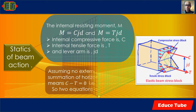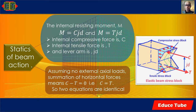The internal resisting moment M results from an internal compressive force C and an internal tensile force T, separated by the lever arm zd. As previously noted, the axial load N equals zero, so the summation of horizontal forces gives C minus T equals zero, meaning C equals T.